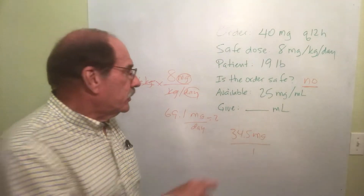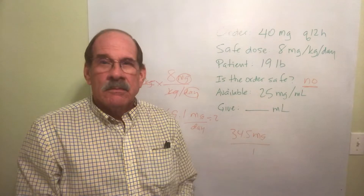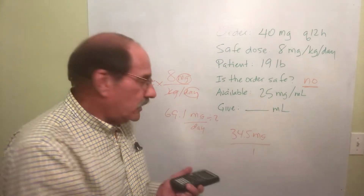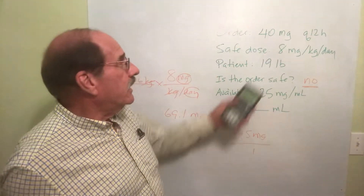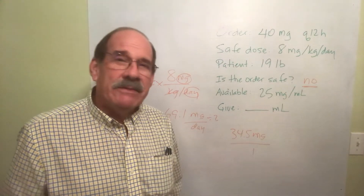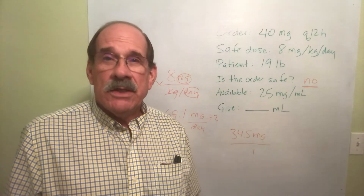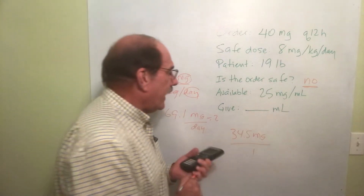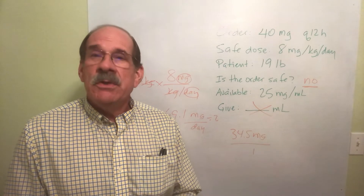Now, what do you do? You don't do a dosage calculation. You don't decide how much you're going to give, because you're not going to give anything. You're not going to give what's been prescribed, and you're not going to give what you consider the safe dosage. You have to call the prescriber and ask what is going on. You must clarify this with the licensed prescriber, so you don't even work out the dosage calculation portion.